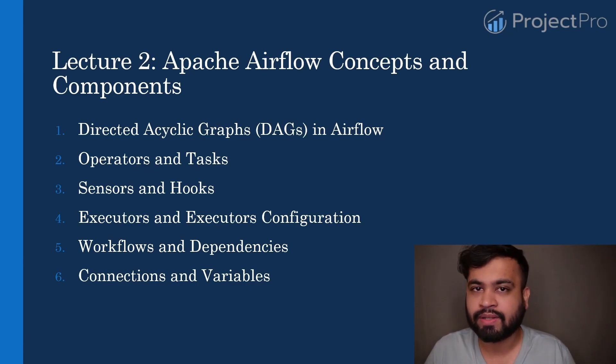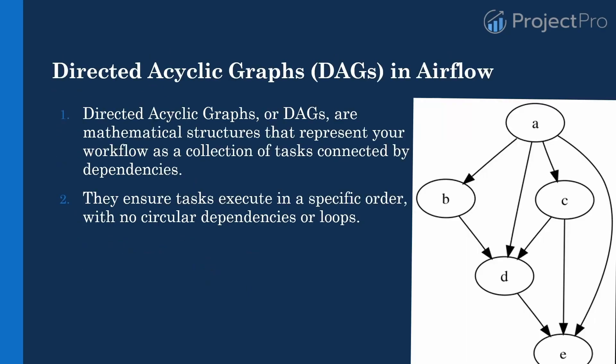So without further ado, let's start with the Directed Acyclic Graph in Airflow. Directed Acyclic Graphs are mathematical structures which represent your workflow as a collection of tasks. These tasks are represented as nodes and they are connected by edges known as dependencies. As you can see in the figure, there are different kinds of tasks which depend on one another — for example, task D depends on tasks B, C, and A.